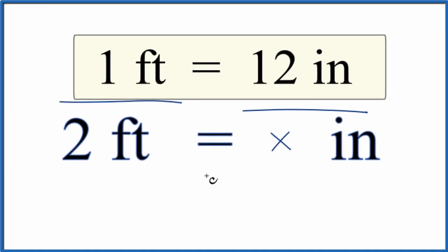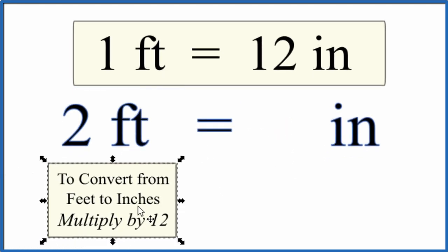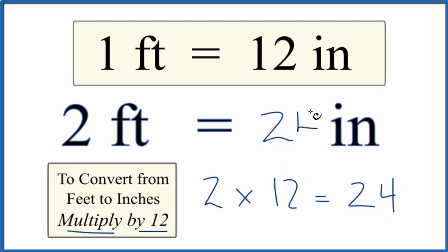Let's look at another pretty easy way. So if you memorize that when you convert from feet to inches, you just multiply by 12, it makes it pretty easy. So two times 12 equals 24. So two feet again equals 24 inches.